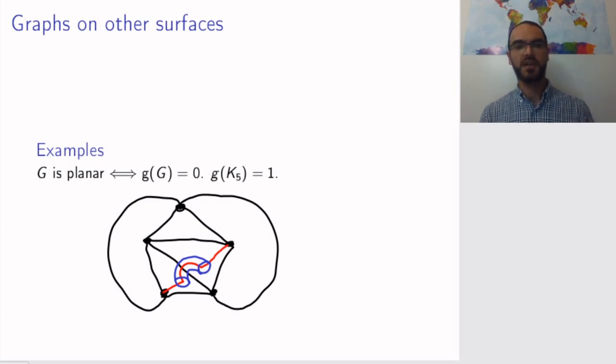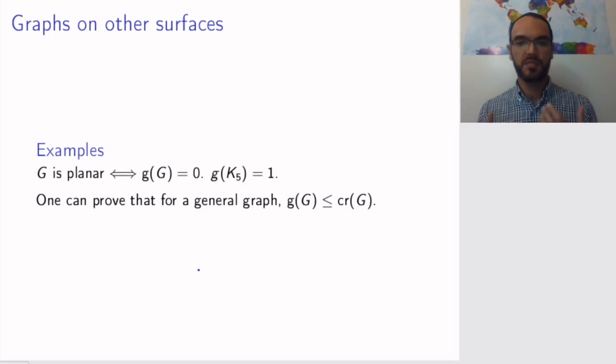And so if you have a graph with any number of crossings, you can place handles everywhere where you have the crossings, and so it will be a graph that is drawable on a surface. More precisely, you can prove that for a general graph, the genus is at most the crossing number, precisely for the reason that you can insert one handle at each crossing. So you need at most the crossing number of handles.